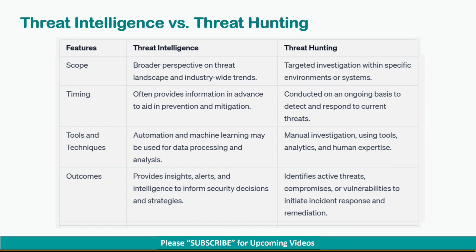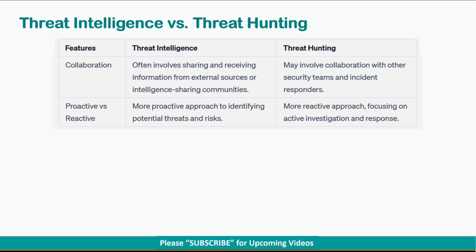In terms of outcomes, threat intelligence provides insights, alerts, and intelligence to inform security decisions and strategies. Threat hunting helps identify active threats, compromises, or vulnerabilities to initiate incident response and remediation. In terms of collaboration, threat intelligence often involves sharing and receiving information from external sources or intelligence sharing communities, whereas threat hunting may involve collaboration with other security teams and incident responders.